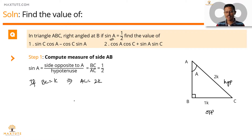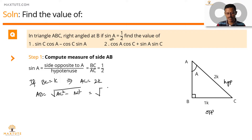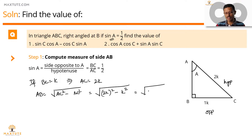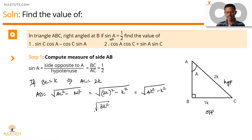Let's apply Pythagoras theorem to find the measure of AB. AB equals the square root of AC squared minus BC squared. AC is 2K, so this is the square root of 2K whole squared minus K squared. 2K whole squared is 4K squared, so we get the square root of 4K squared minus K squared, which is the square root of 3K squared, which equals root 3K. So the third side AB equals root 3K.